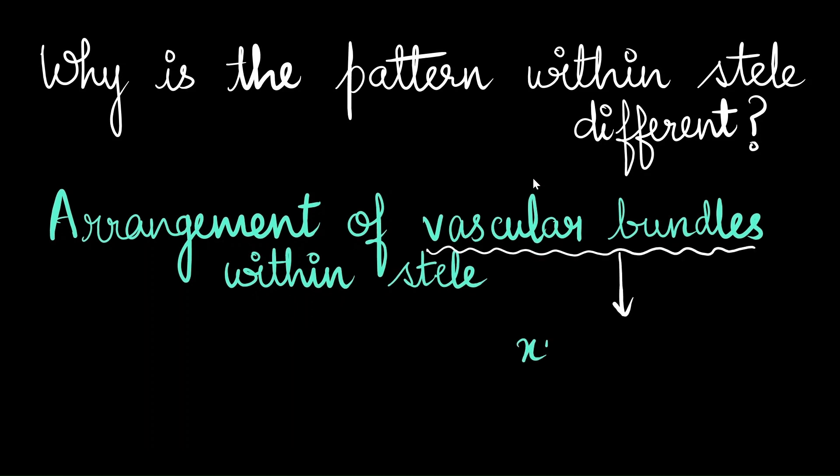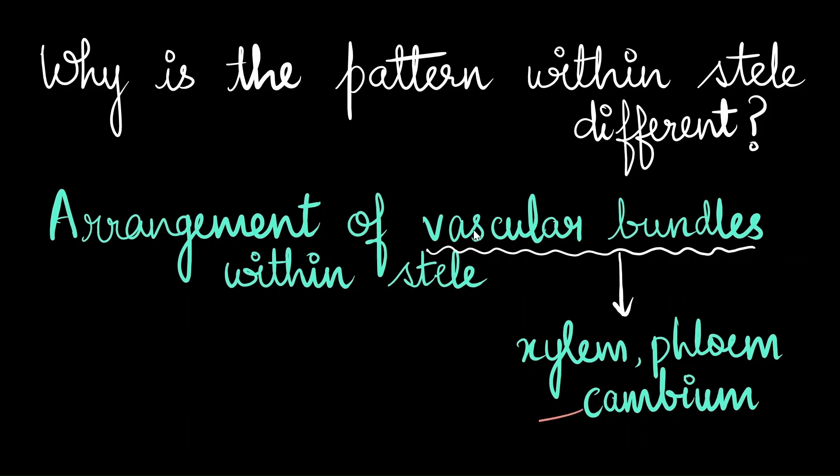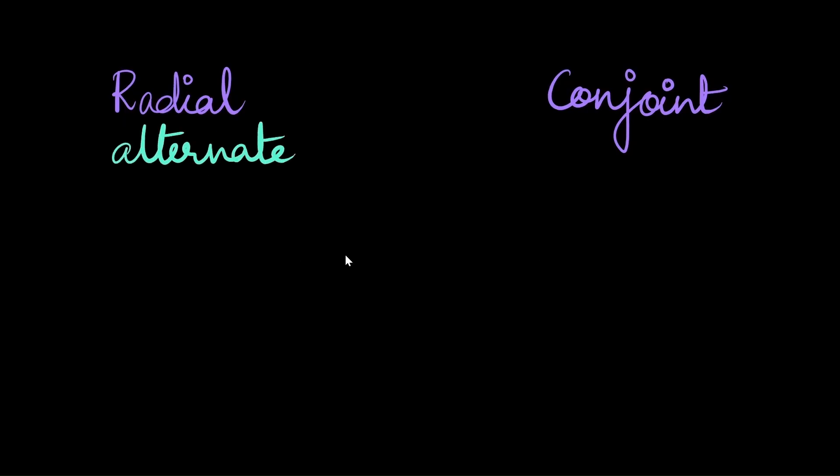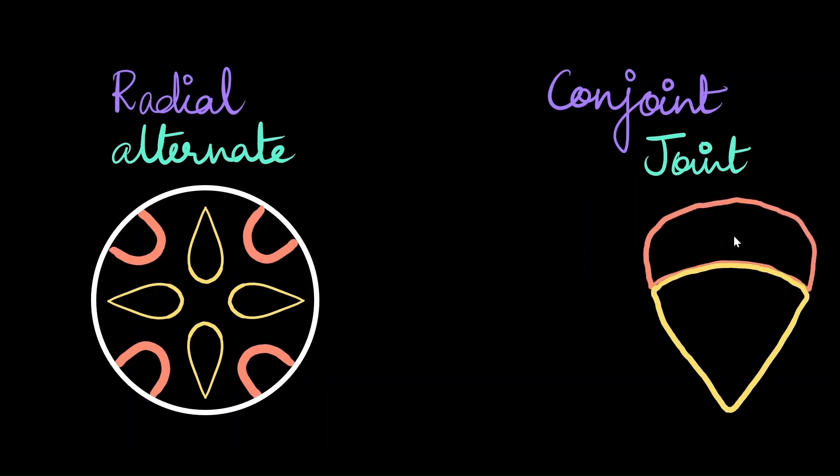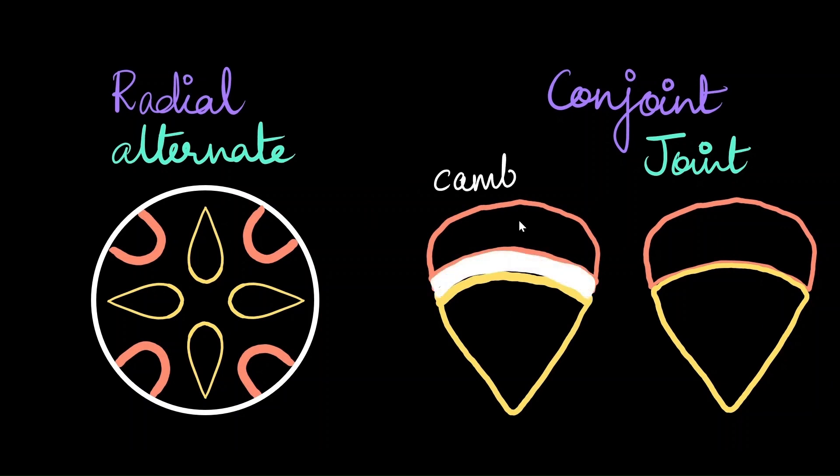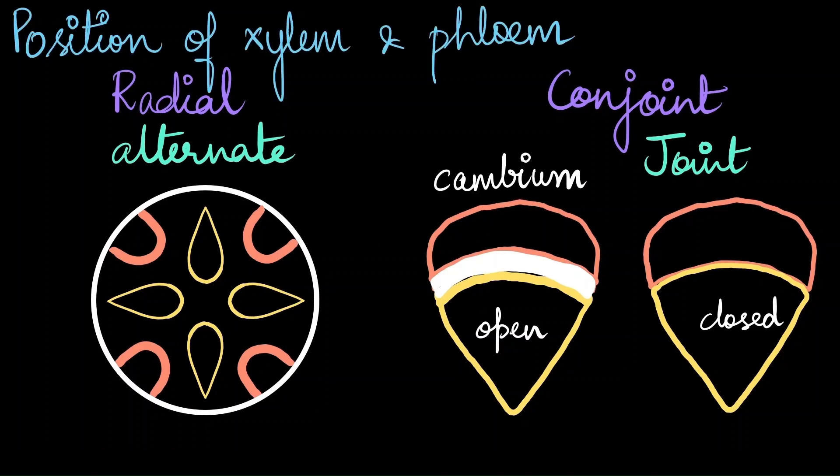Vascular bundle is nothing but the xylem and phloem. In some cases, we also have a tissue called as cambium. This is present only in case of dicots. There are two specific arrangements of vascular bundles. One called as radial and the other is conjoined. In radial arrangement, you see an alternate pattern of arrangement between xylem and phloem. The yellow here is the xylem and the orange here is the phloem. In case of conjoint, they are joined together. So the bottom is xylem and the top is phloem. In dicots, the cambium is found in between the xylem and phloem. So when there is no cambium, it's called as a closed arrangement, whereas when cambium is present, it is called as an open arrangement.